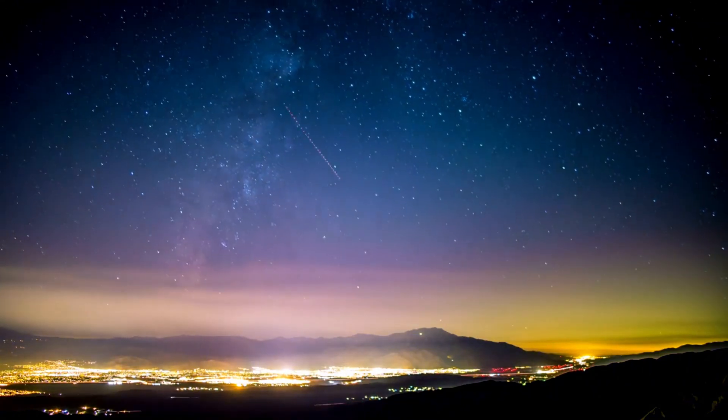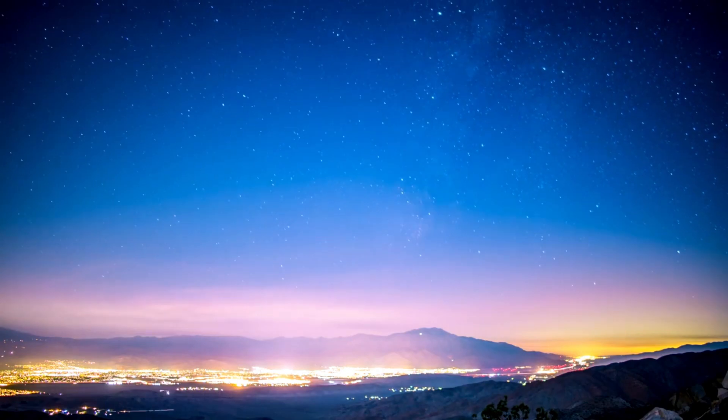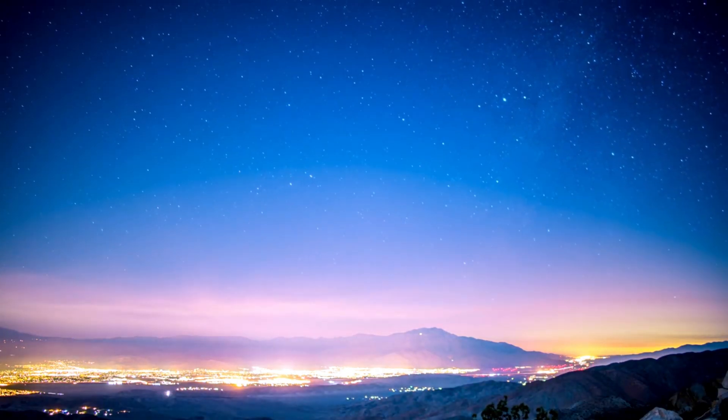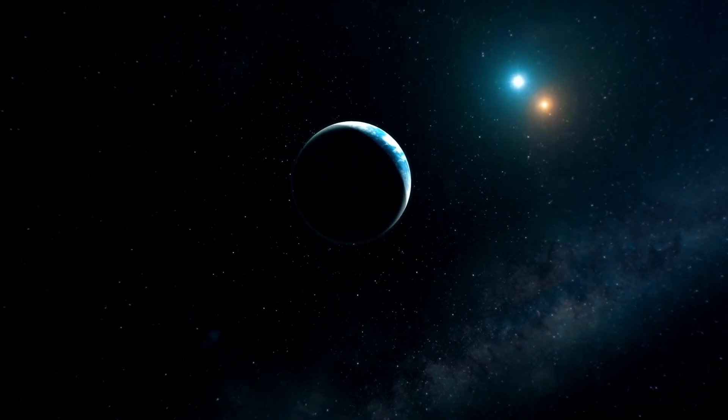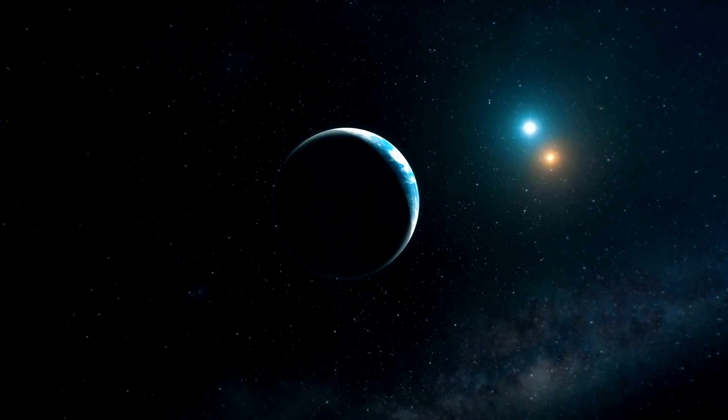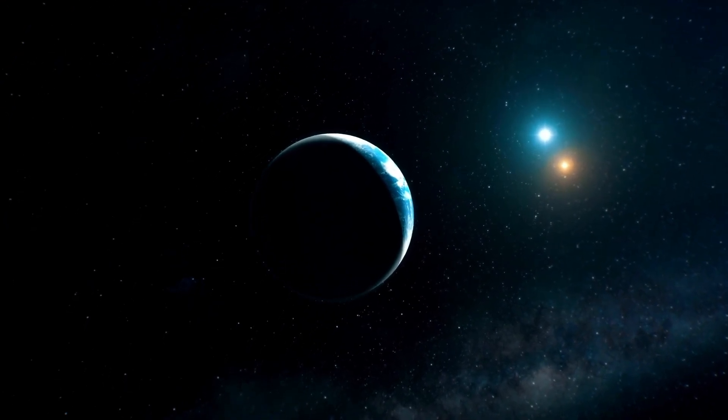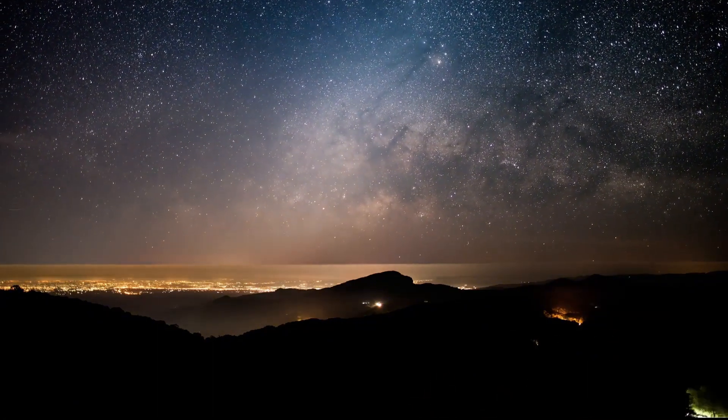Also known as the North Star or Pole Star, Polaris is special due to its proximity to the celestial North Pole. Situated almost directly above Earth's North Pole, it appears almost stationary in the northern sky, found in the constellation Ursa Minor or the Little Dipper. Polaris shines as a moderately bright yellow-white supergiant star, much larger and brighter than our Sun.